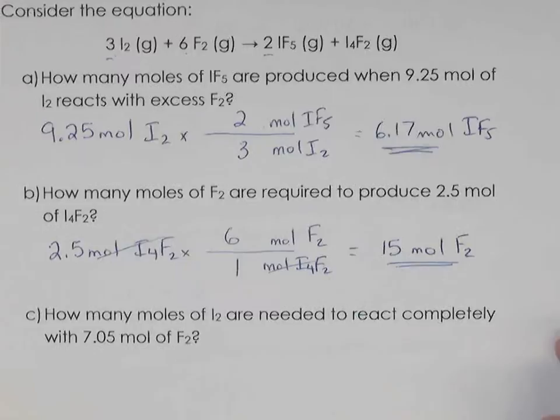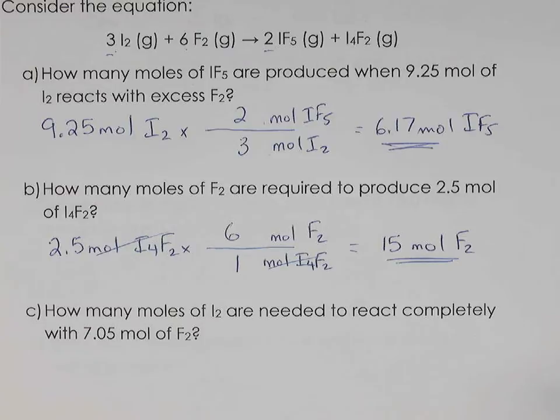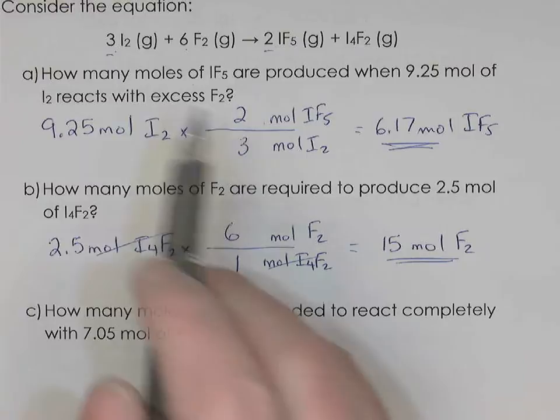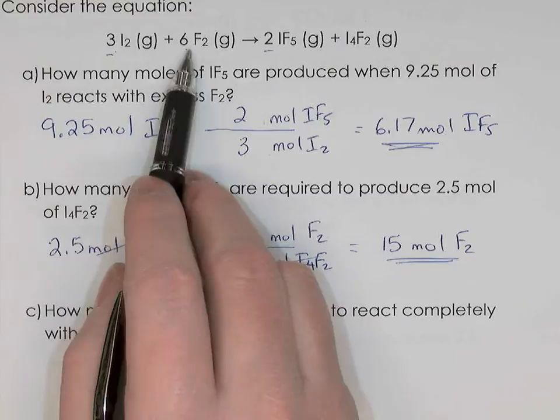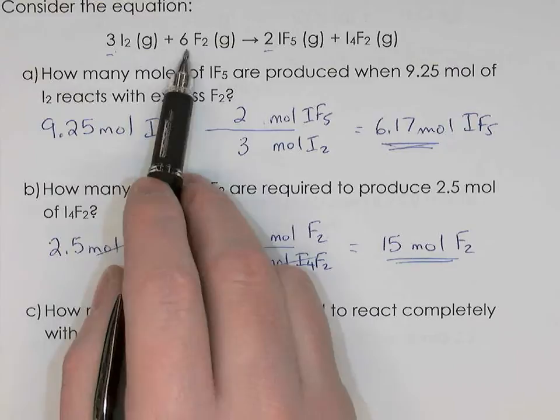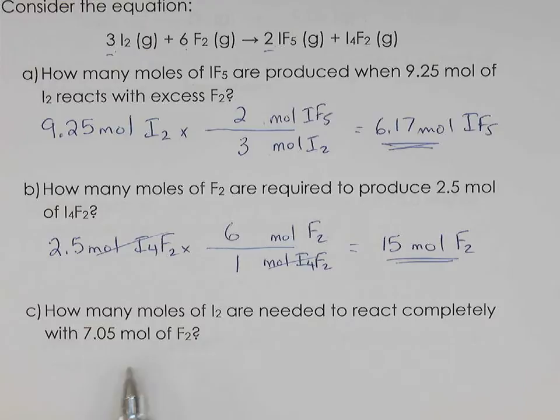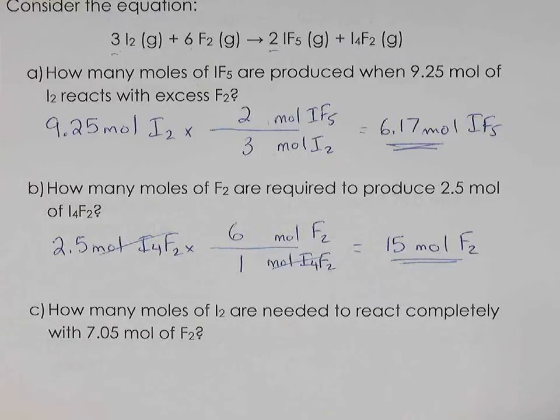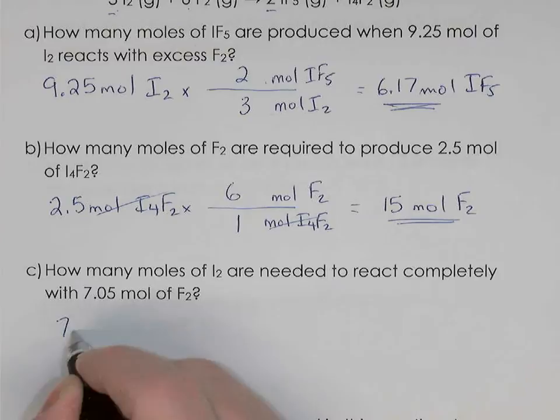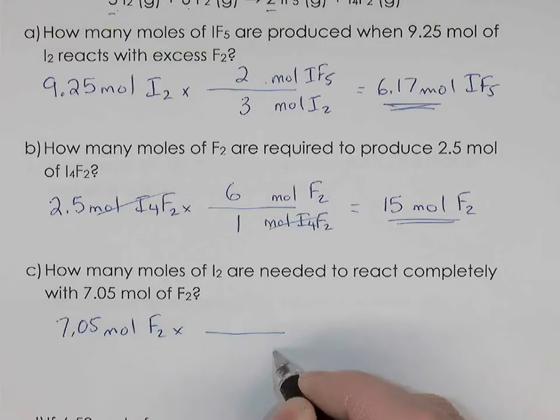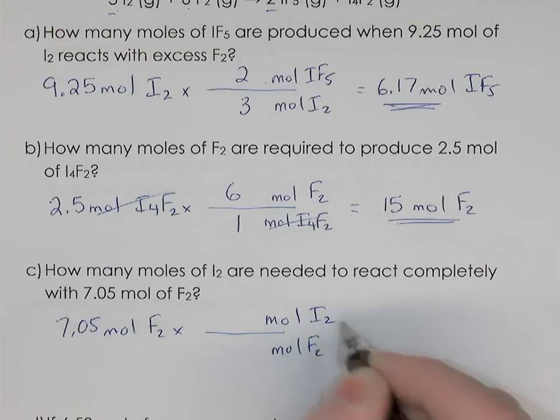Third part: how many moles of iodine would you need to react with 7.05 moles of fluorine? Looking at the balanced equation, you need 3 moles of iodine for every 6 moles of fluorine — the amount of iodine is half as much as the fluorine. So if you have 7.05 moles of fluorine, you'll need about half of that. We set up the unit multiplier starting with 7.05 moles of fluorine and convert to moles of iodine.